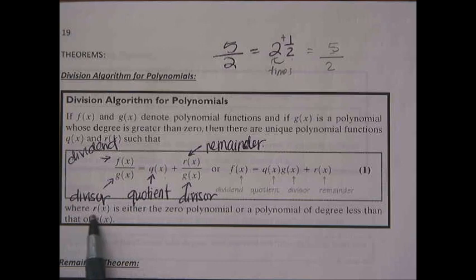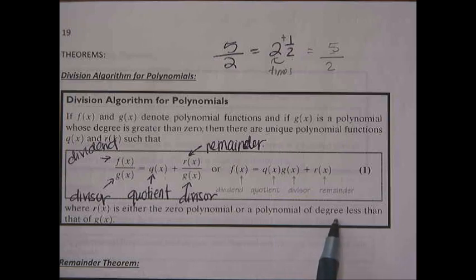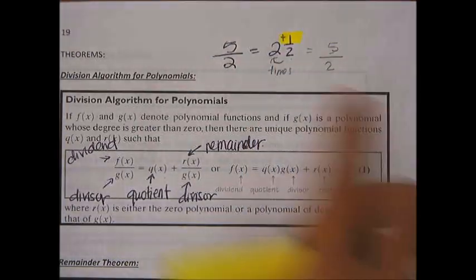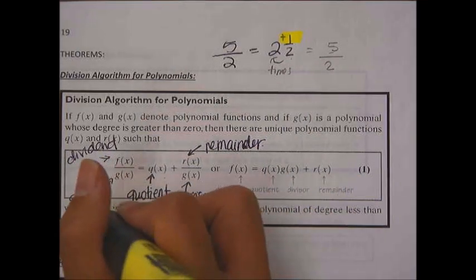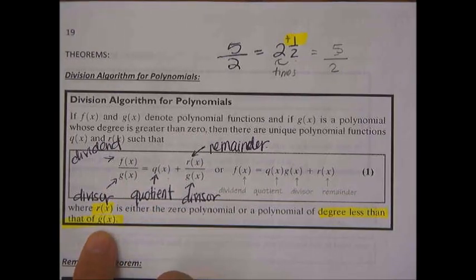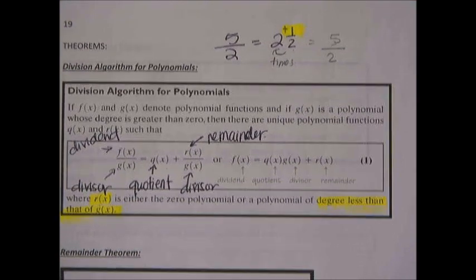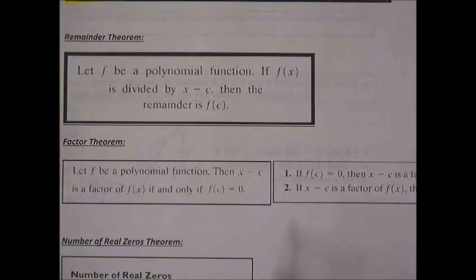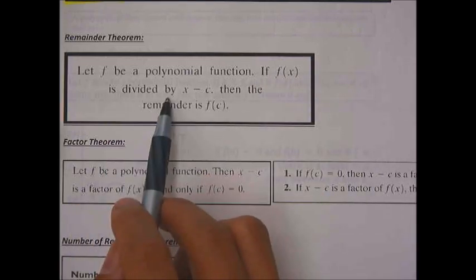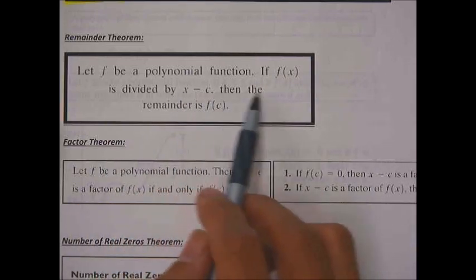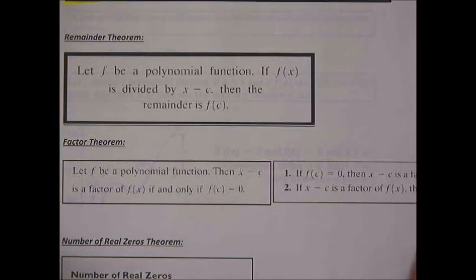The remainder is either zero or a polynomial of degree less than that of g(x) — meaning if you have a remainder, its degree must be less than your divisor. Now, the Remainder Theorem: if f(x) is divided by x minus c, then the remainder is f(c).